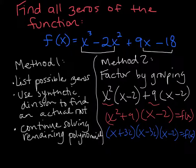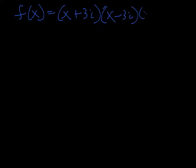Okay, so let's keep finding our zeros. Let me rewrite this. We had x plus 3i, x minus 3i, and we had an x minus 2.